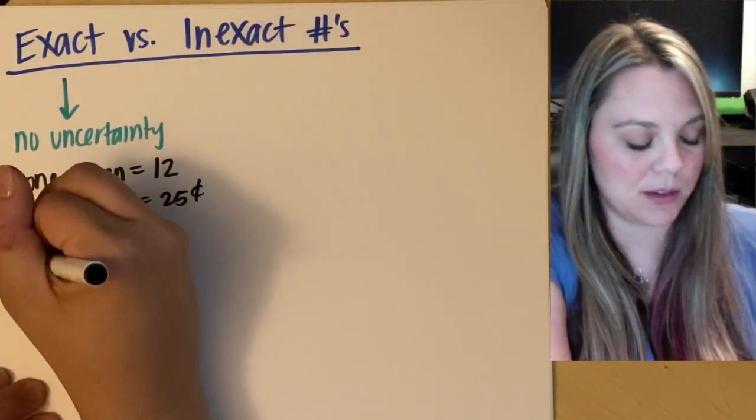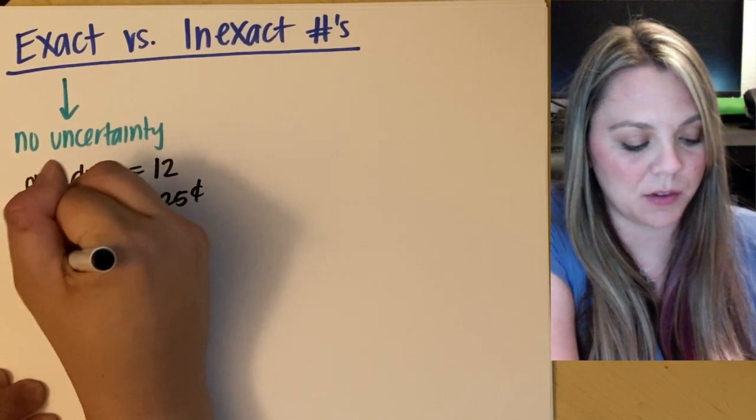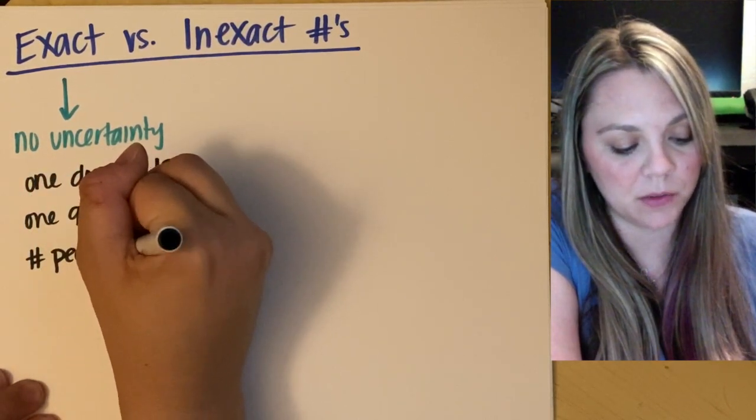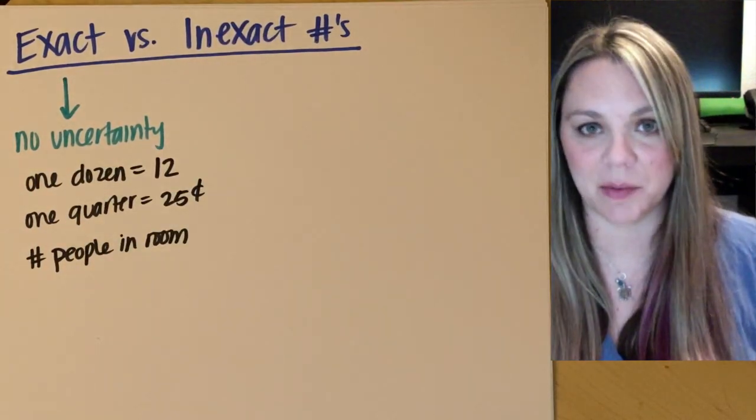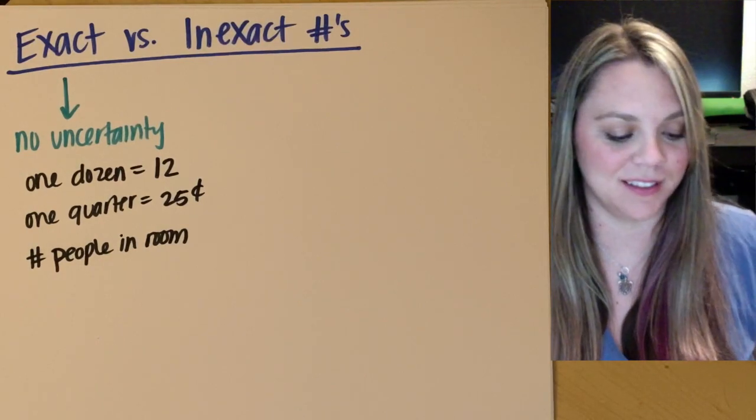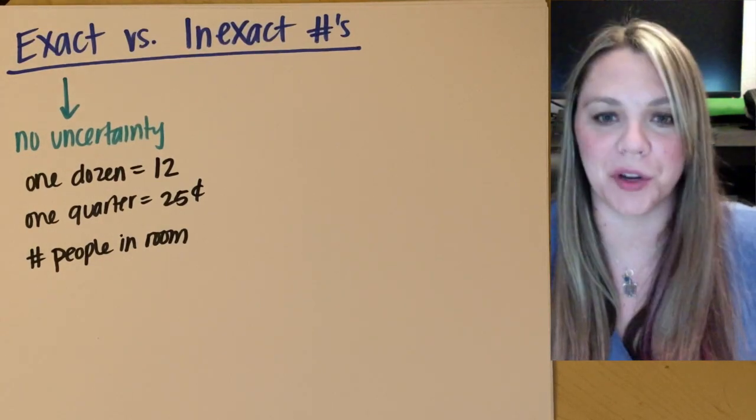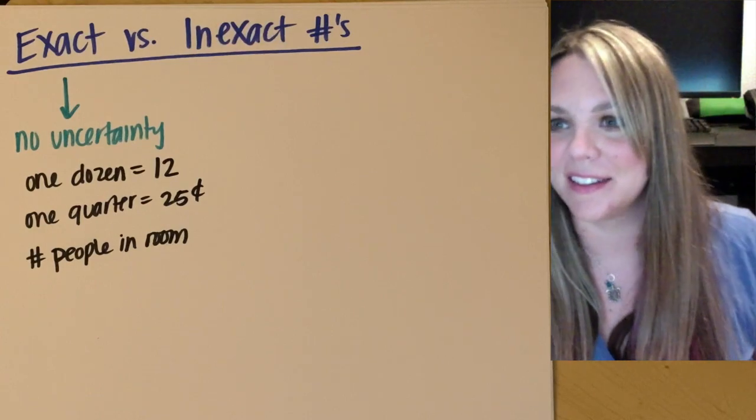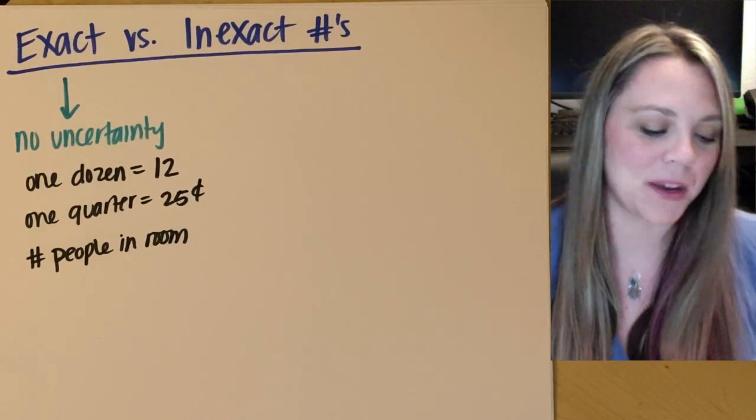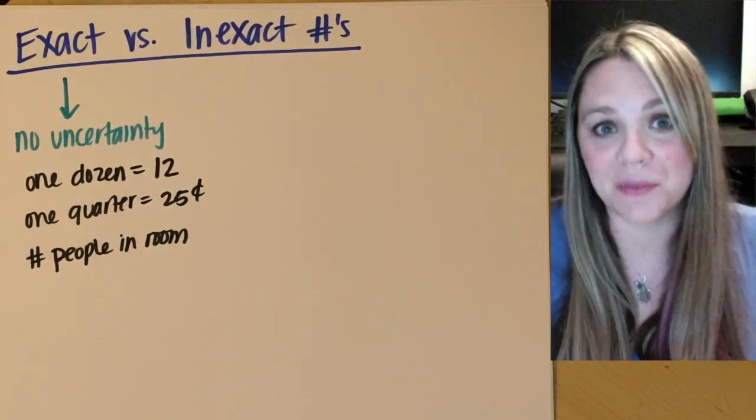Other exact numbers would be if you were counting the number of people in the room. That's an exact number, right? If you're like in my room currently, there's only one because it's like one in the morning when I'm filming this. Okay. But there's one, there's one of me in this room.